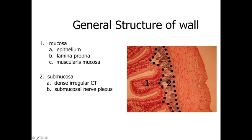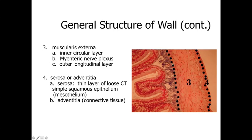Underneath the mucosa is the submucosa, a dense irregular connective tissue that may contain the submucosal plexus. The deeper layer is the muscularis externa, characterized in most regions by two layers: an inner circular layer where smooth muscle cells wrap circumferentially around the lumen, and an outer longitudinal layer where we see cross-sections of smooth muscle cells running along the length of the organ.